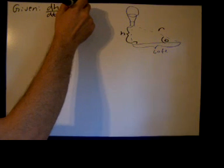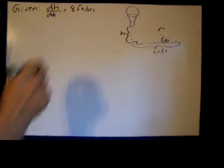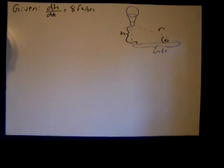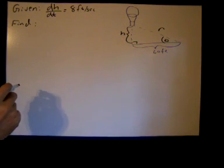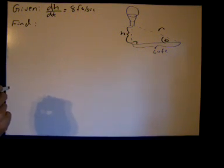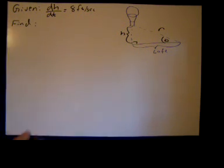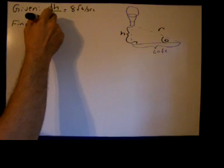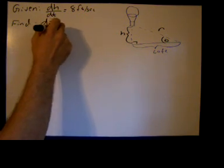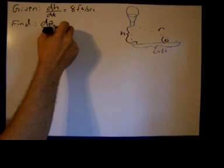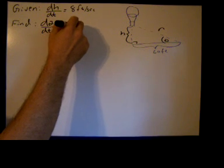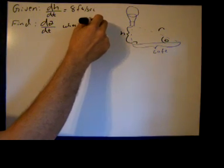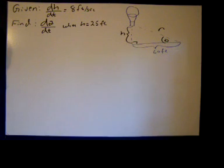We want to find the rate of change at which the angle of elevation is changing when h, or the height of the balloon, is 25 feet. So we want to find dθ/dt, the rate of change of the angle of elevation. We want to find dθ/dt when h equals 25 feet.